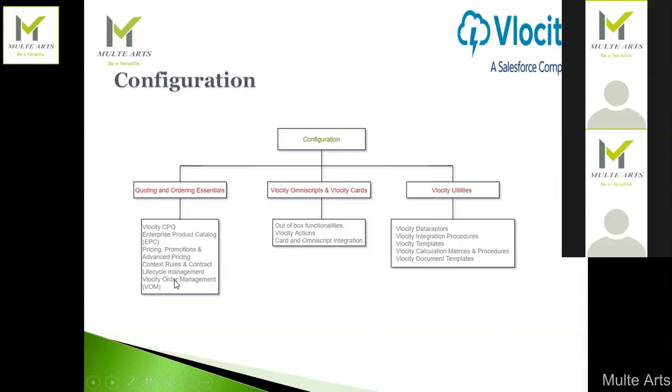CLM and order management will not be covered in detail in this batch. We are primarily focusing on development and the Velocity CPQ part — product creation, price list association, attribute creation, and how to associate all these together.